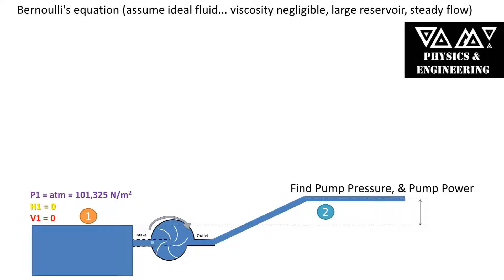In this problem we have a reservoir that is attached to a pump. We will be referring to the top of the waterline of the reservoir as point one. At this point we have atmospheric pressure acting on it, and we will be setting the height at zero and the velocity is zero being that it is a very large reservoir.